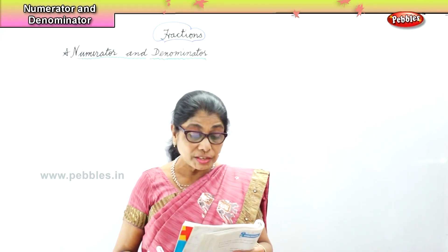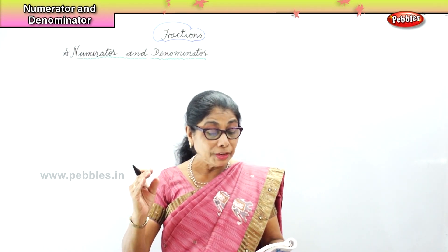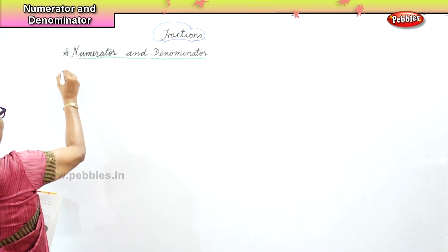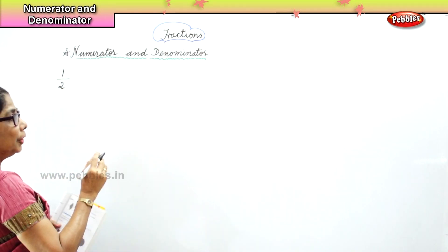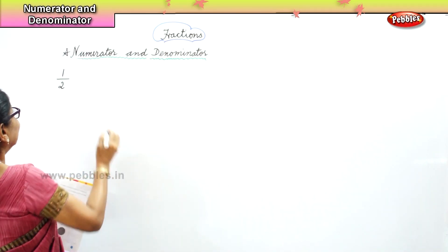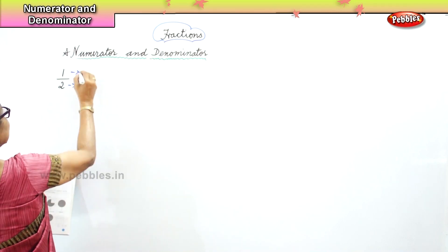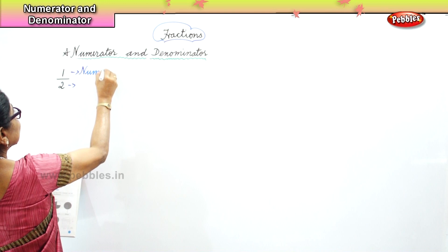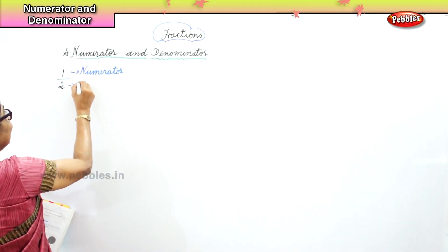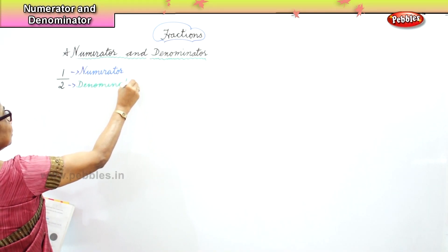In a fraction, the numeral written at the top is called the numerator, and the numeral written below the line is called the denominator. For example, in one by two, the numeral on the top is called the numerator and the numeral below the line is called the denominator.